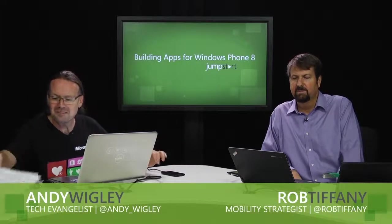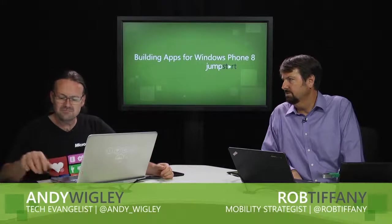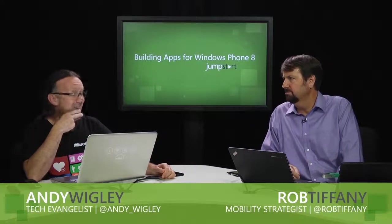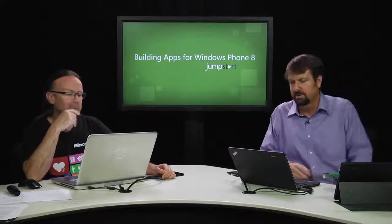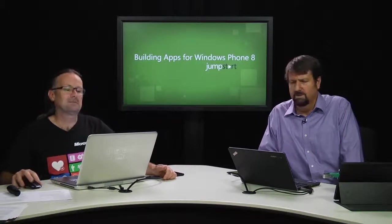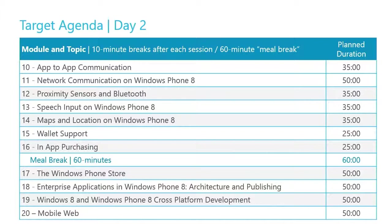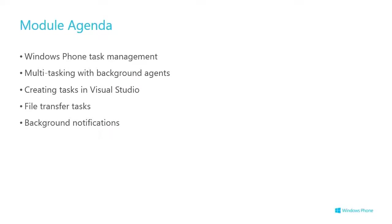We're back. We've got a nice little break — very short. So I think we're going to keep building on things, assuming Andy really knew what he was talking about as each slide has a logical linkage. We're going to talk about background agents now. We're in kind of an application lifecycle theme at the moment. But a consistent theme we keep seeing is this agenda thing. As you can see in red, we are on background agents. We only have a few more left: tiles, push notifications, and using phone resources, and then we're done for the day.